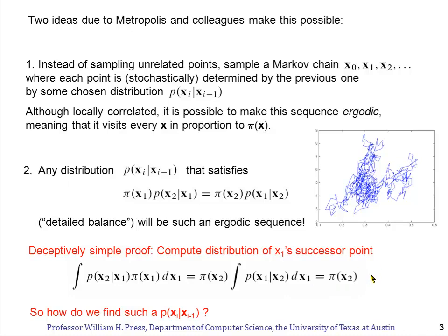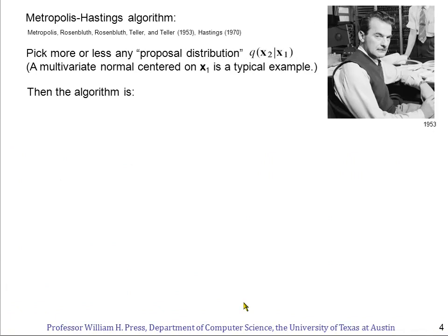So therefore I just get pi of X2. That therefore shows that the distribution of X1's successor point under detailed balance is in fact proportional to this underlying distribution pi of X2. So all we have to do now to implement this scheme is find a transition function p from i minus 1 to i that satisfies detailed balance. And that's where Metropolis and his colleagues found something pretty clever.